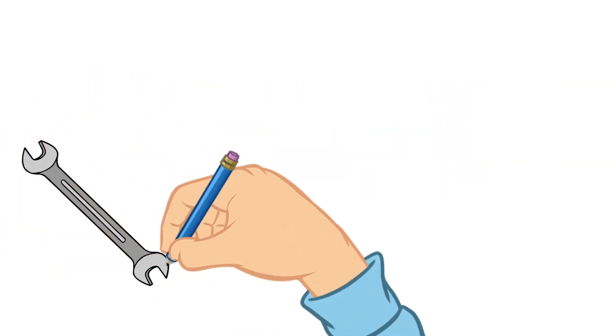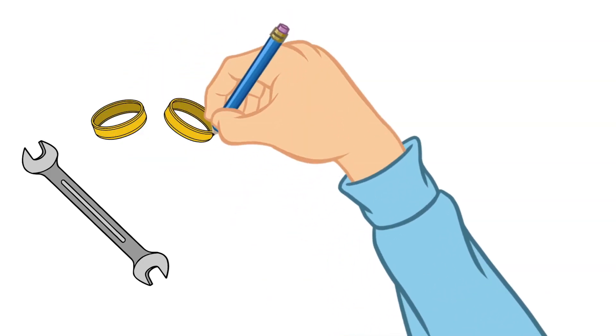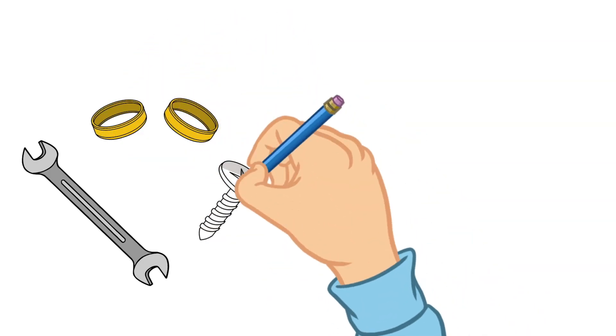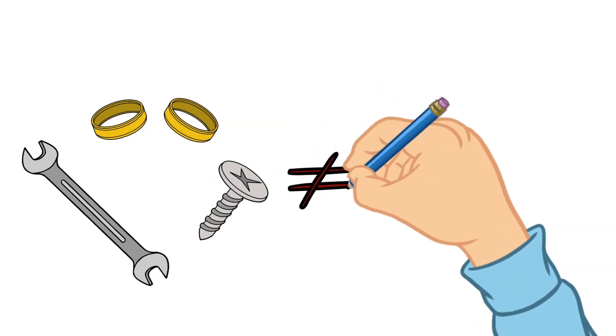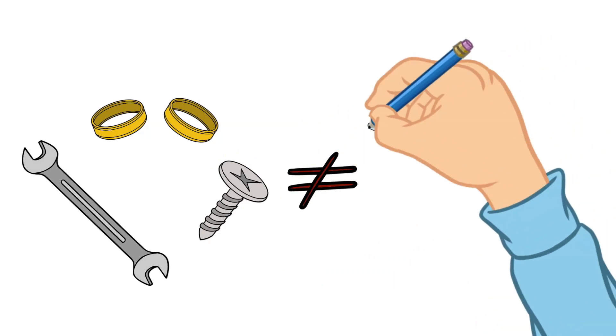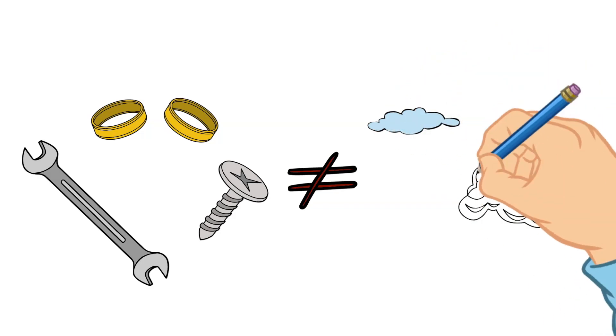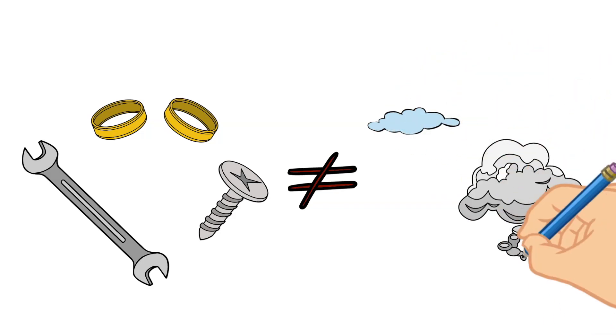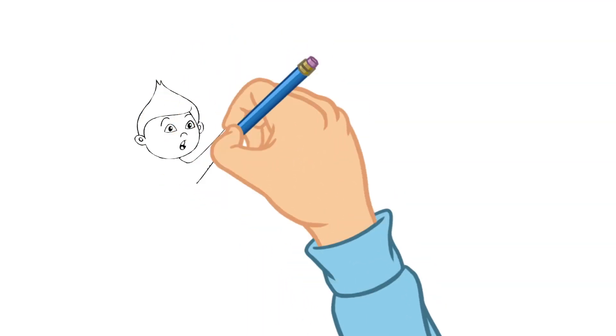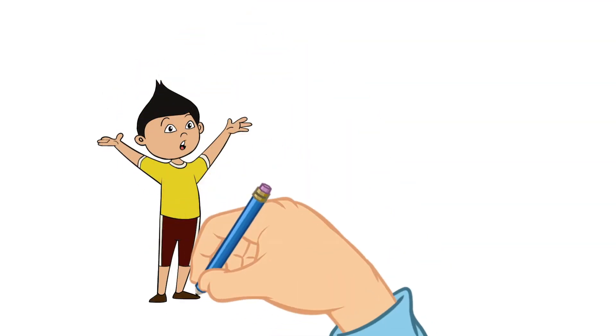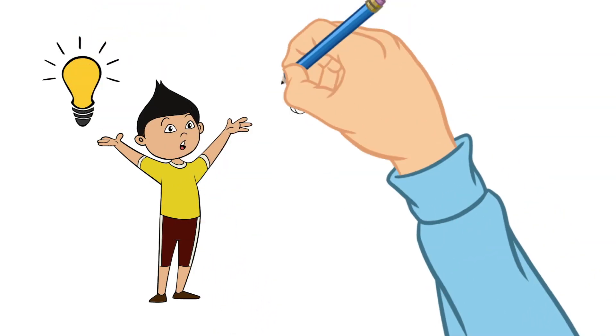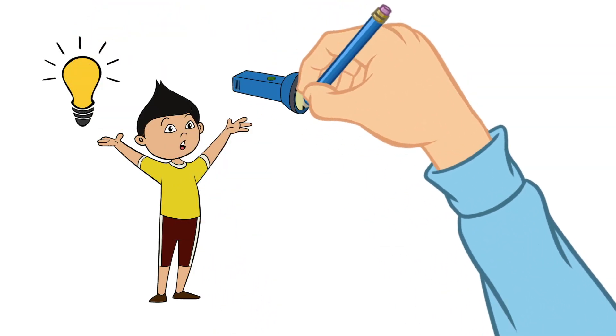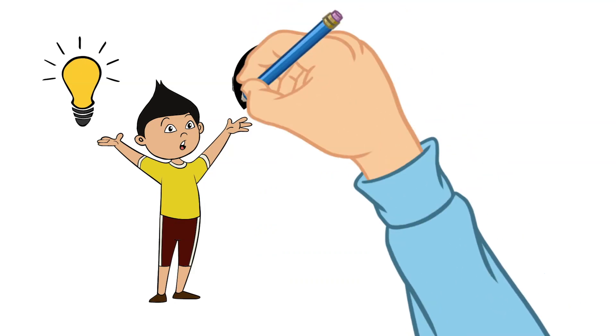Each of these families reacts in a certain way and behaves with the world around it in different ways. For example, metals are quite different from gases, and you wouldn't expect them to behave the same way. One family can be a very good conductor of electricity, while another family of elements may not conduct electricity very well at all.